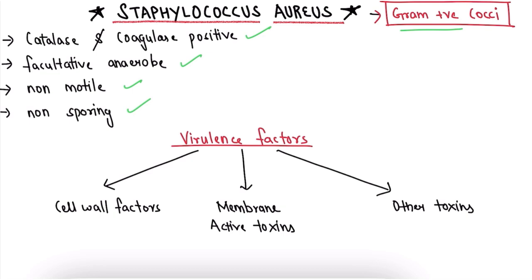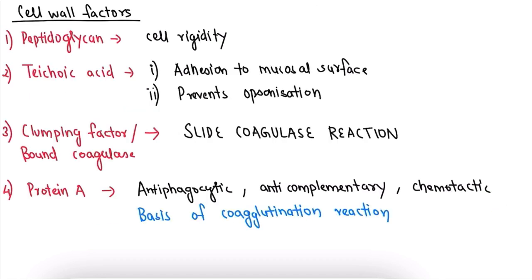The virulence factors of Staph. aureus include cell wall factors, membrane active toxins, and other toxins. Starting with cell wall factors: peptidoglycan confers cell rigidity to the bacteria. The second is teichoic acid, which helps in adhesion to mucosal surfaces and also prevents opsonization.